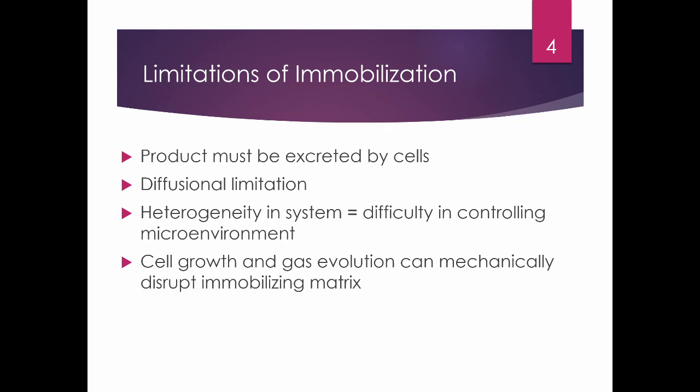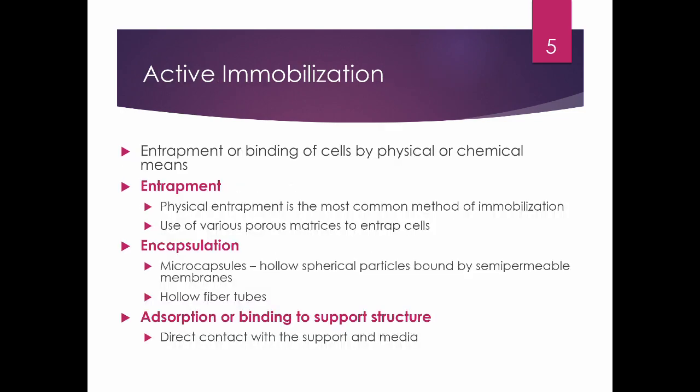Cell growth and gas evolution can mechanically disrupt the immobilizing matrix. You cannot really stop cells from growing, so when they grow large enough, they can rupture open your biofilm or immobilizing system. They can also produce gases that increase pressure and rupture your immobilizing matrix.